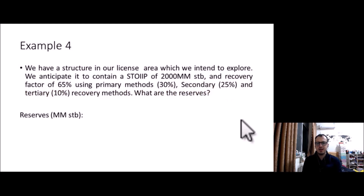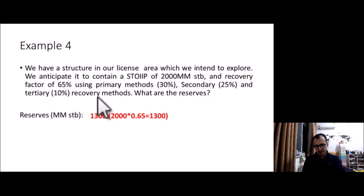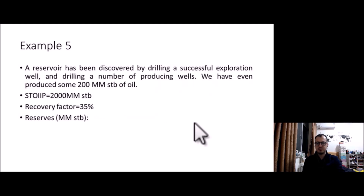Example 4: We have a structure anticipated to contain a STOIIP of 2,000 million stock tank barrels with a recovery factor of 65% using primary, secondary, and tertiary methods combined. The reserves are what is anticipated to be commercially recoverable: 2,000 × 0.65 = 1,300 million stock tank barrels.